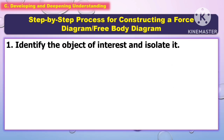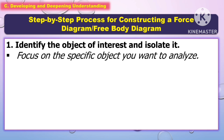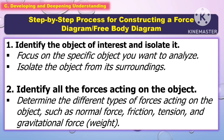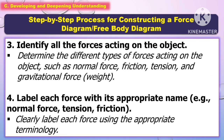The step-by-step process for constructing a force diagram or free body diagram: For the first step, identify the object of interest and isolate it — focus on the specific object you want to analyze and isolate it from its surroundings. The second step is to identify all the forces acting on the object, such as normal force, friction, tension, and gravitational force or weight. The third step is similarly to determine the different types of forces acting on the object.